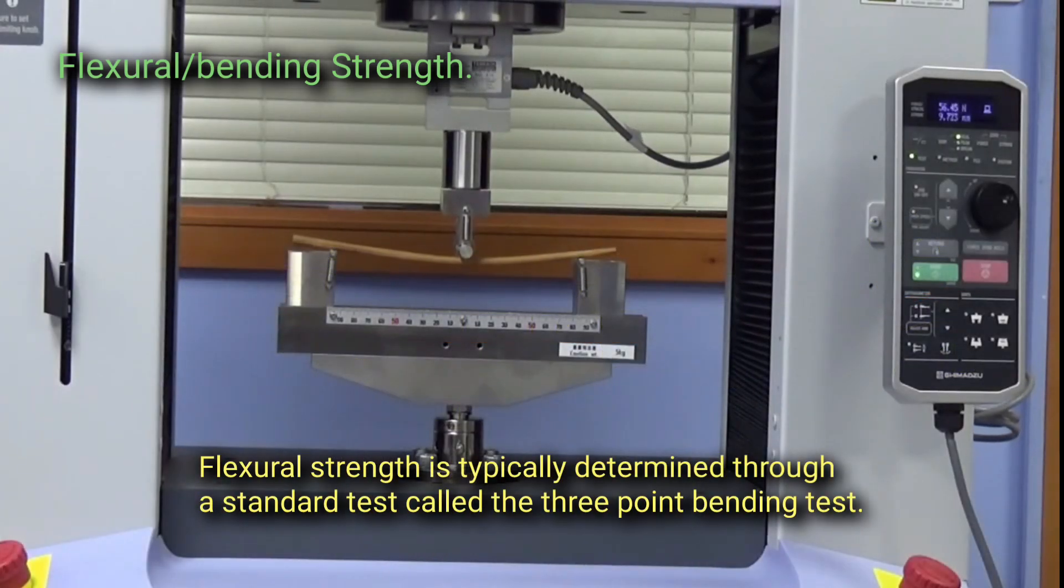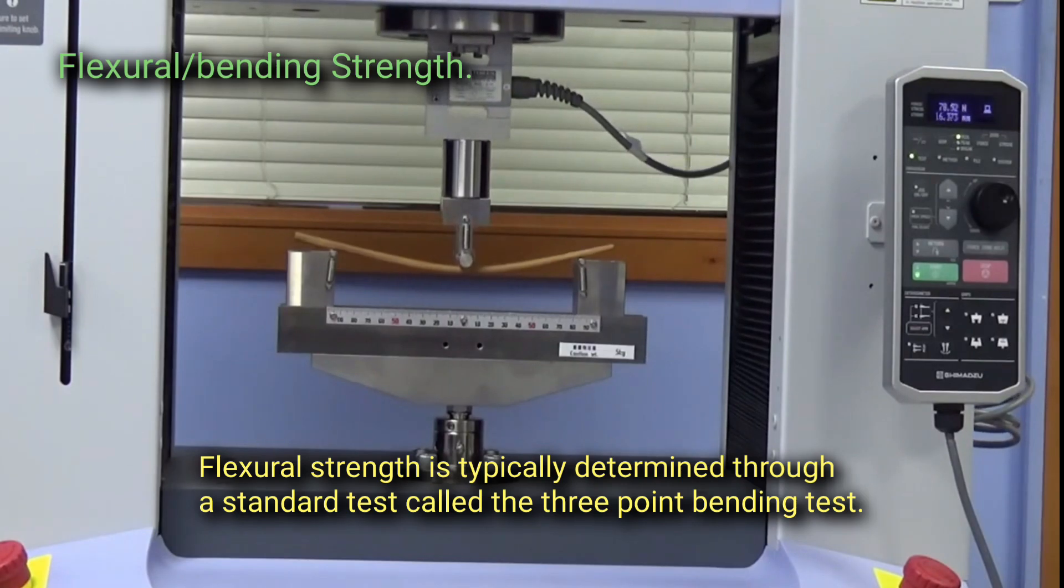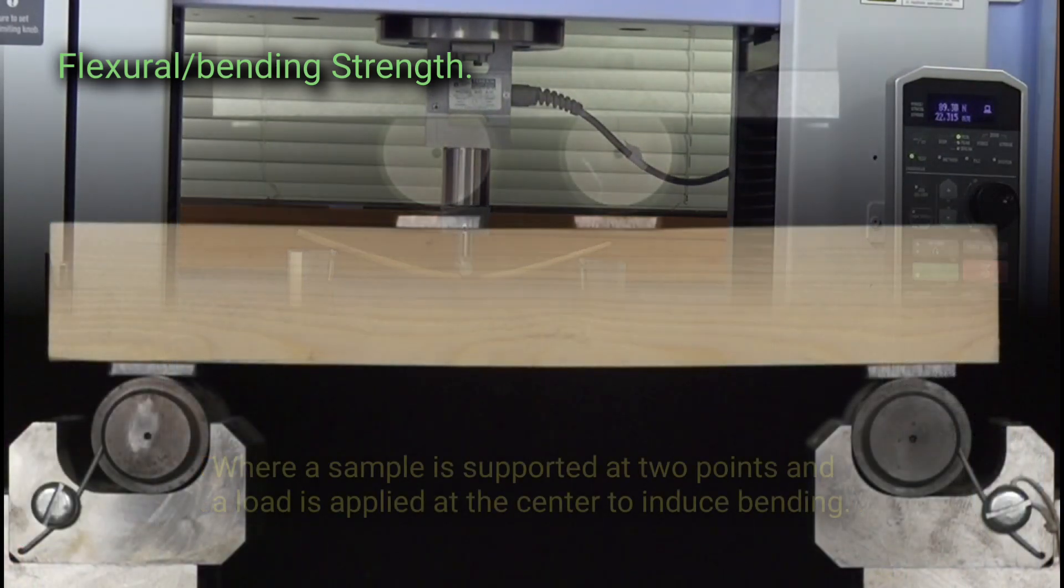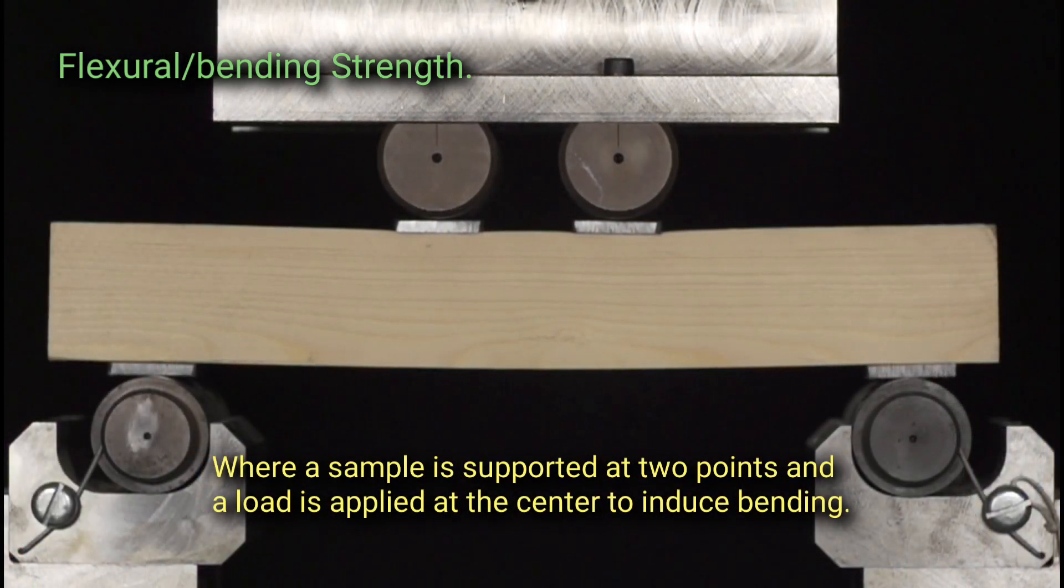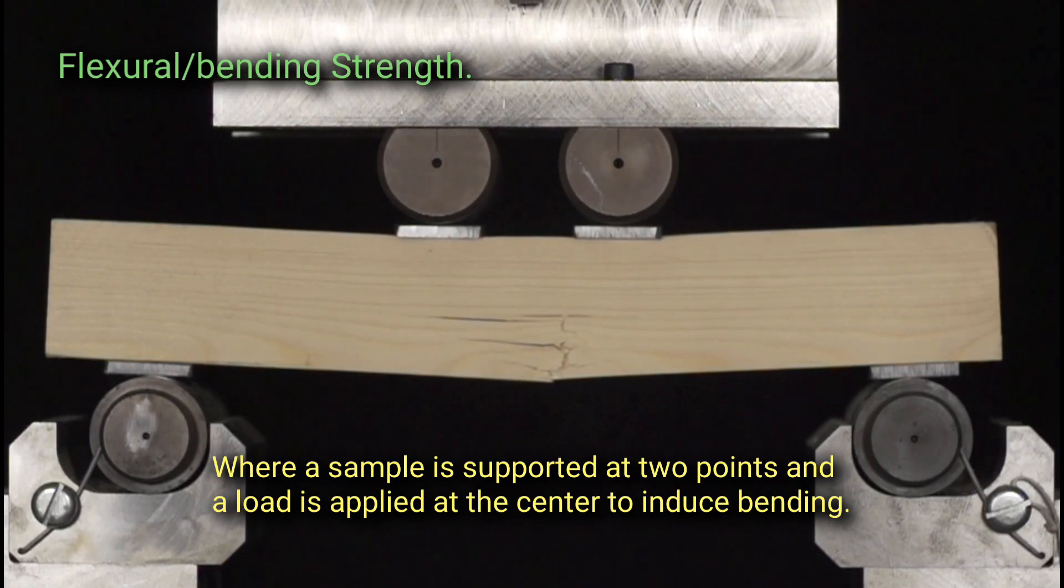Flexural strength is typically determined through a standard test called the three-point bending test, where a sample is supported at two points and a load is applied at the center to induce bending.